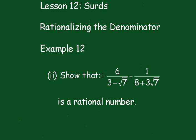Now this one we have to show that 6 over 3 minus root 7 plus 1 over 8 plus 3 root 7 is a rational number. I'll rationalize each of these.